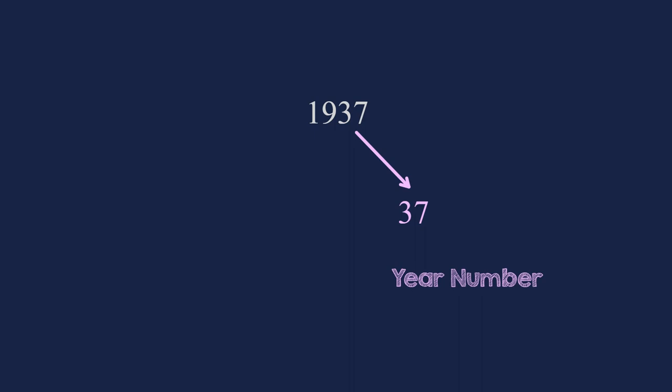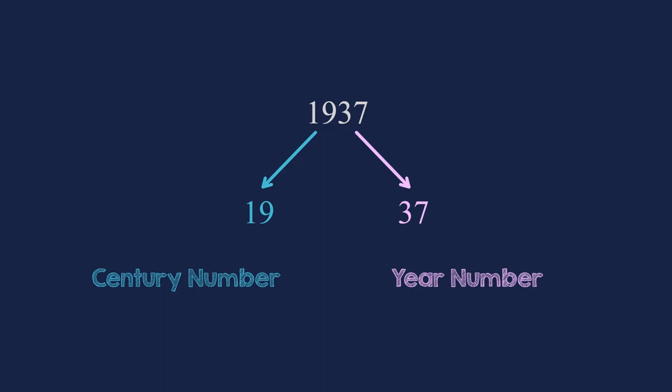Now, to compute the weekday of a doomsday of a given year, we first split the number that represents the year in two. The last two digits, which forms a number we denote by y, let's call it the year number, and the rest in front, which we denote by c. This is the century number. Not the century, mind you, because, for example, the year 1937 is in the 20th century, but the number that sits at the 100th position. With the century number, we can compute the so-called anchor day, which is the basis for the next steps. It is the weekday of the doomsday in the year c100. This anchor day, let's call it a, can be computed with the formula c mod 4 times 5 plus 2 mod 7.